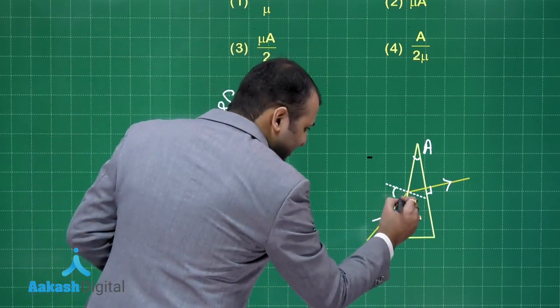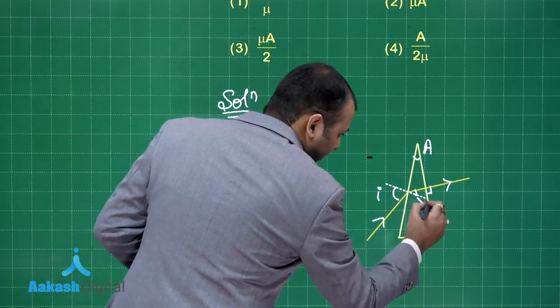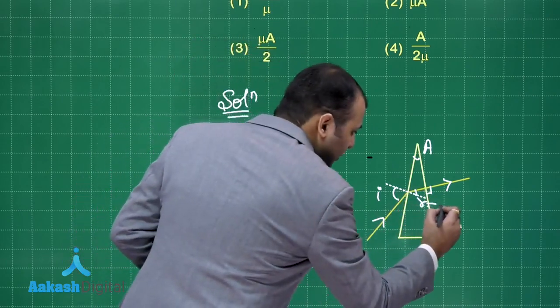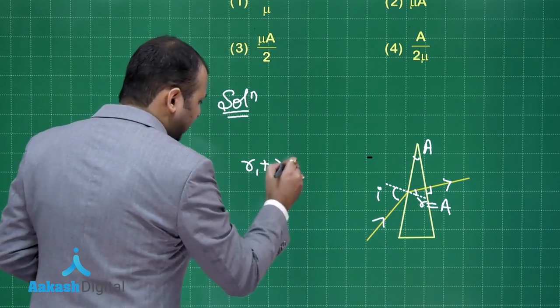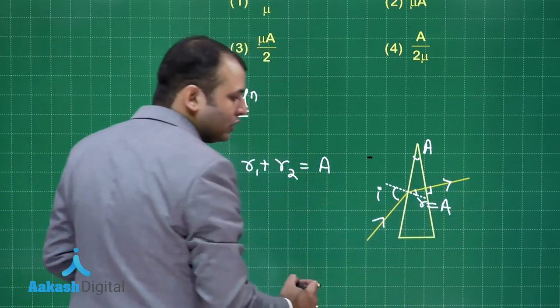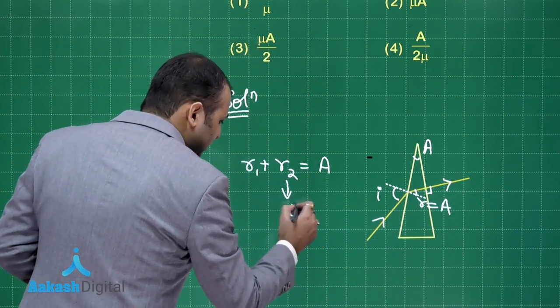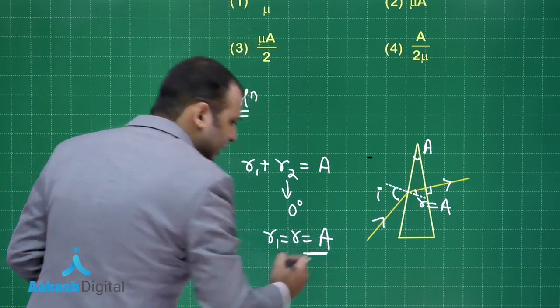Now this is angle of incidence, this is A, so this angle would be R, that is angle of refraction, and which would be equal to A. Why so? Because in these questions you know that R1 plus R2 is equals to A. Since it moved perpendicularly, in that case this would be 0 degree. So R1 is equals to R, that is equals to A in our case.